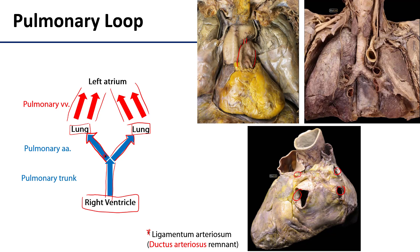Now, I said we would come back to the ligamentum arteriosum, which is this structure here. It is a ligament-like attachment between the origin of the right main pulmonary artery and the arch of the aorta, and it is a remnant of a fetal artery called the ductus arteriosus. The ductus arteriosus would shunt rather oxygenated blood coming from the mother through the fetal heart, bypassing pulmonary circulation and going directly to the aorta. It's one of two major bypasses, the other being the foramen ovale in the wall of the interatrial septum.